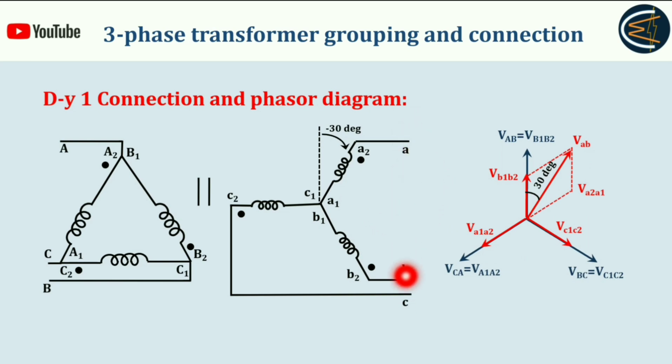A and this is terminal B. Between A and B, this winding is coming V_A2A1 and V_B1B2. The vectorial sum of V_A2A1 and V_B1B2, see here V_B1